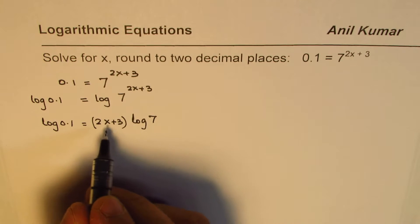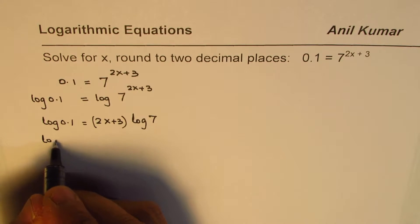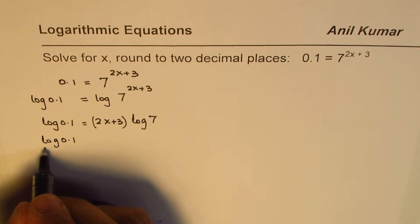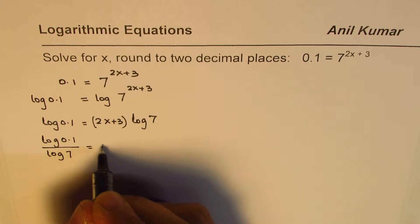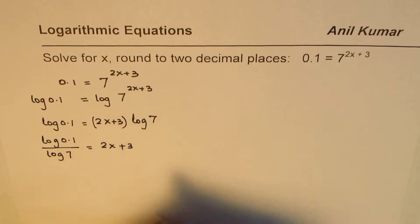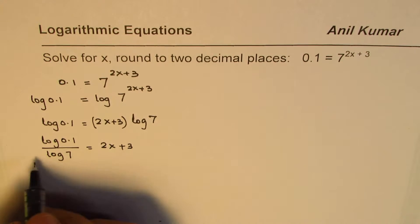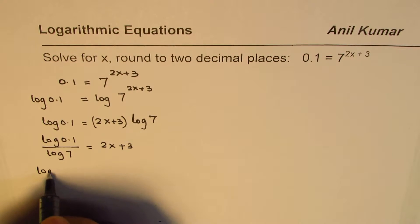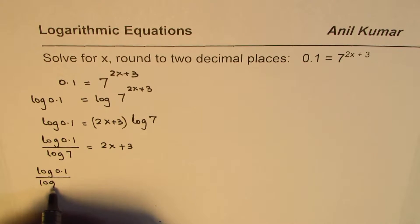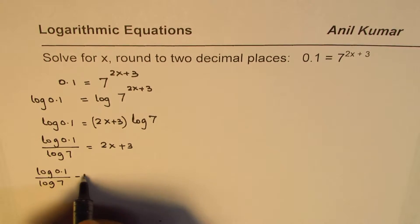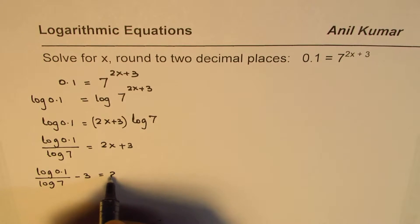Now we can isolate x. log(0.1) divided by log(7) equals 2x+3. So we can now take 3 to the other side. So we have log(0.1)/log(7) - 3 = 2x.